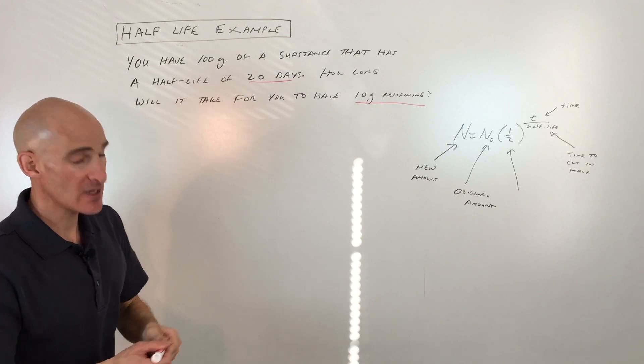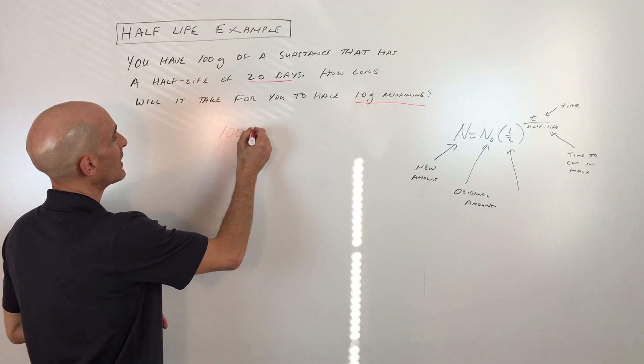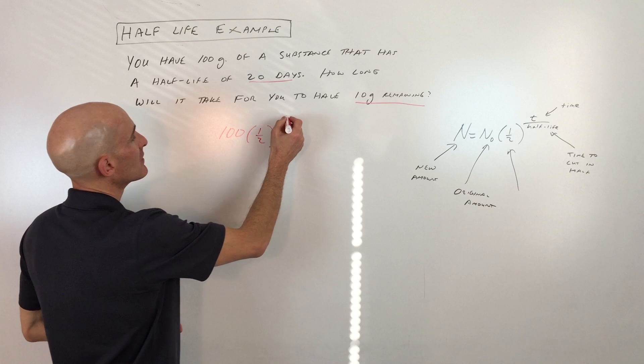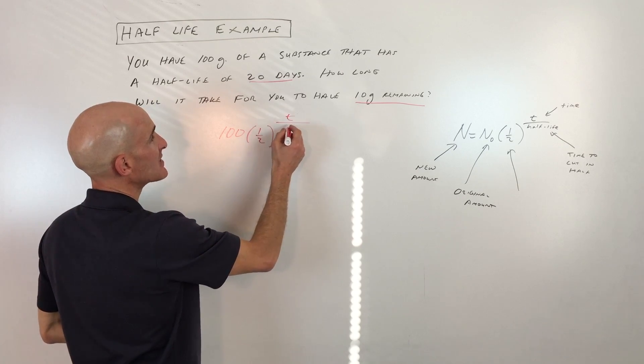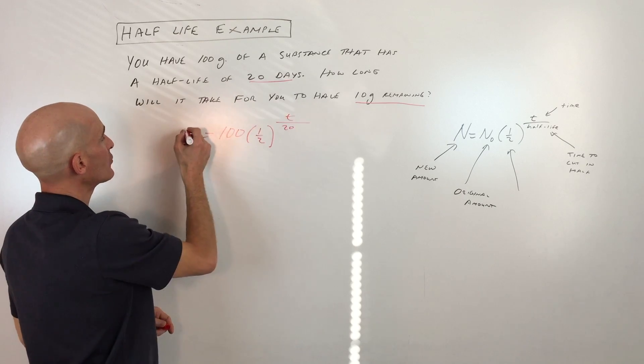So let's see if we can use the formula here. We're starting with 100 grams. One half. We're trying to figure out the time that it takes. The half-life is 20 days. And we want to end up with just 10 grams. So that's 10.